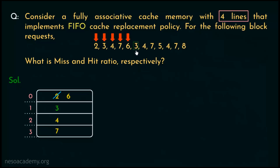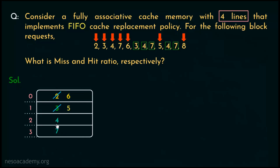The next block requests for 3, 4, and 7 will be cache hits since they are already inside the cache. During block request 5, the cache is again full, so we perform FIFO: block number 3, which got placed inside the cache first among those present, is evicted and makes space for block number 5. Thereafter, block requests for 4 and 7 result in cache hits. Coming to block request 8, the cache is again full, so FIFO is applied: block number 4 is evicted and makes space for block number 8.